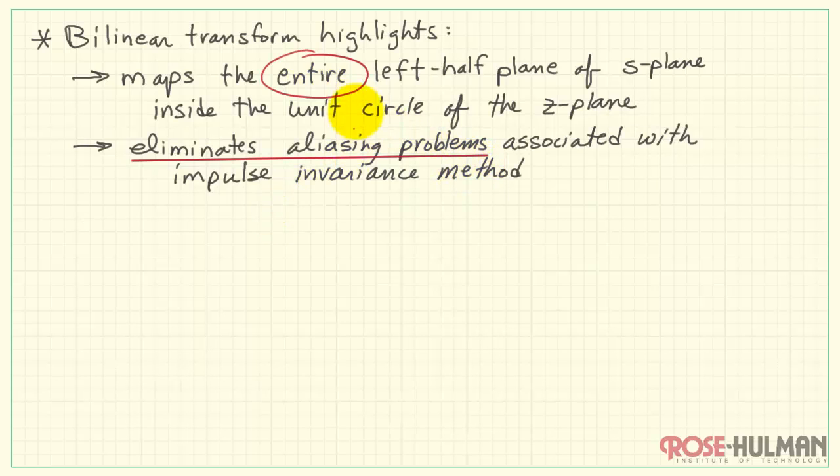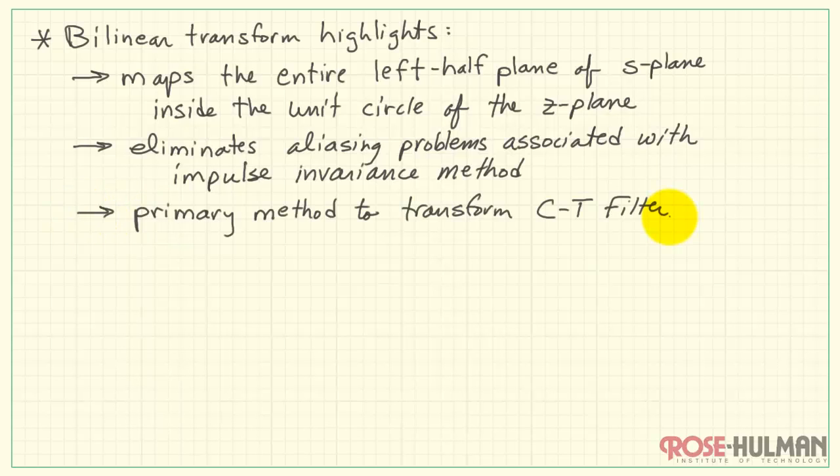Impulse invariance samples the continuous time impulse function. However, the bilinear transform maps the entire left half plane into the unit circle. Therefore, there is no aliasing due to sampling.